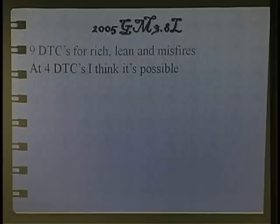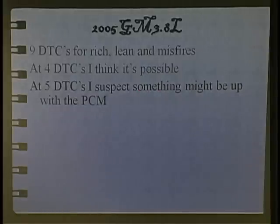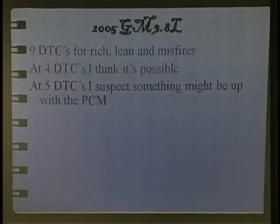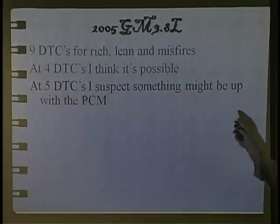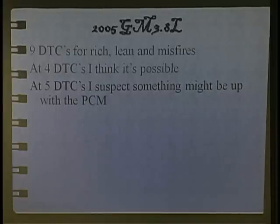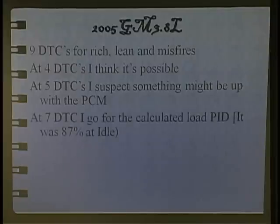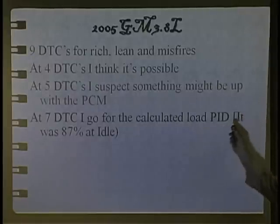Did you ever get one with 14? Stop it — clear them and go away. Four is my number. At five, I suspect something's up. At five, I go: okay, this might be a factor later. I don't like five, but it's kind of close to four. At seven DTCs, I go for the calculated load again — that's when I start dividing manufacturers from experience.